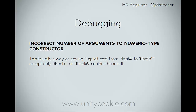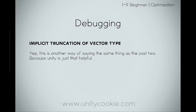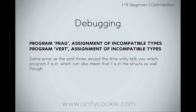'Incorrect number of arguments to numerical type constructor.' This is Unity's way of saying implicit cast from float4 to float3, except only DirectX 11 and DirectX 9 couldn't handle it. 'Implicit truncation of vector type' - yes, this is another way of saying the exact same thing as the past two, because Unity is just that helpful. 'Program frag / program vert assignment of incompatible types' - same error as the past three, except this time Unity tells you which program it is in, which can also mean it is in the structs as well.